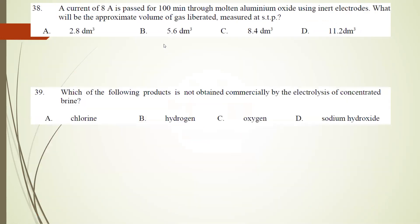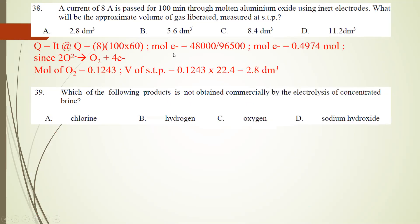Number 38: a current of 8.8 A is passed for 200 minutes through molten aluminum oxide using inert electrodes. What is the approximate volume of gas liberated at STP? Q = IT = 8 × 100 × 60 = 0.4974 mol of electrons. Stoichiometrically, 2O2- → O2 + 4e-, so mol of O2 = 0.1243. Volume at STP = 22.4 × 0.1243 = 2.8 dm³. The answer is A.